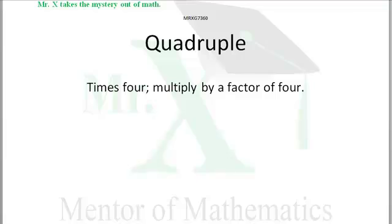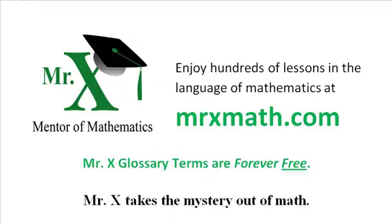Quadruple. It's a verb. It means to multiply by four. Mr. X, Mentor of Mathematics at MrXMath.com